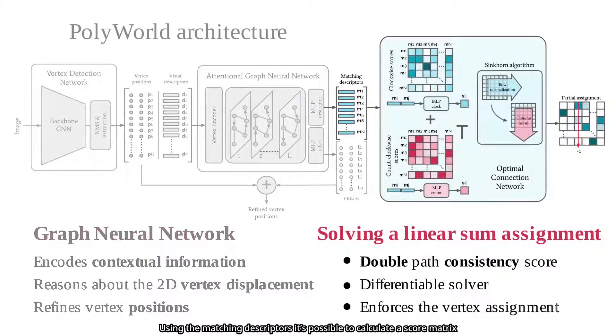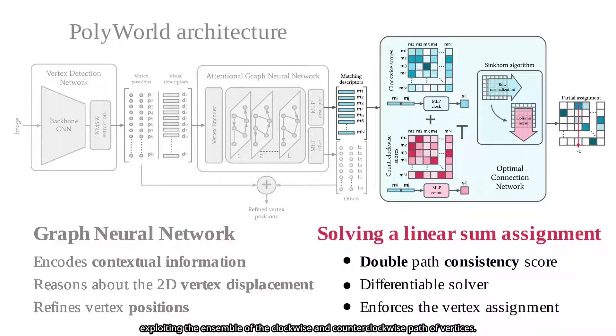Using the matching descriptors, it's possible to calculate a score matrix that represents the connection affinity between the points, exploiting the ensemble of the clockwise and counterclockwise paths of vertices. The score matrix defines the cost of a linear assignment problem, which is solved with the Sinkhorn algorithm in a differentiable way.